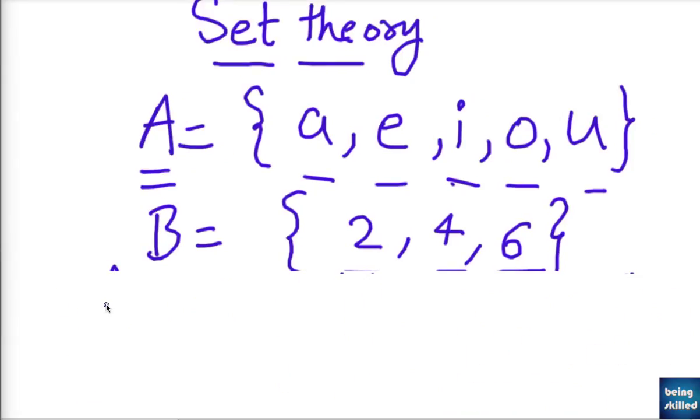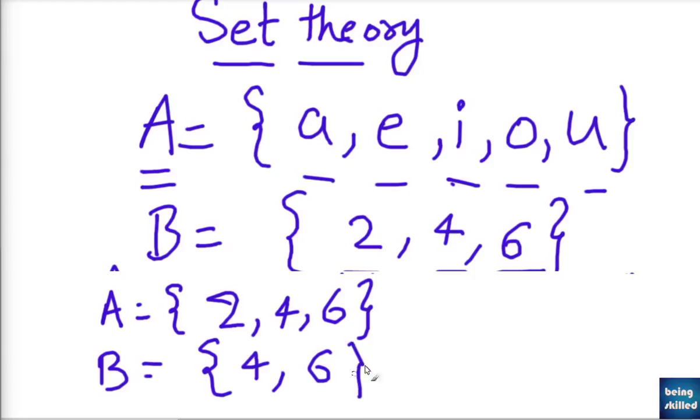But since we cannot see any common element between set A and set B, so A intersection B in this case would be null. But had it been a case if we would have set, let's say, 2, 4, 6, and second set will have, let's say, 4 and 6, so in this case our A intersection B will become 4 and 6.